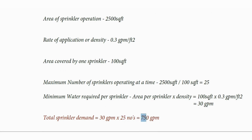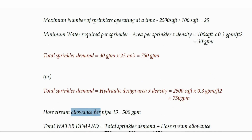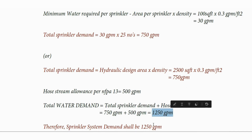Multiplying 30 GPM by the total number of 25 sprinklers, we get a sprinkler demand of approximately 750 gallons per minute. Adding the hose stream allowance per NFPA 13 for extra hazard, which is 500 GPM, gives 750 plus 500 equals 1250 GPM total water demand. In the same way, we can calculate the sprinkler system demand for extra hazard group 2 occupancy.